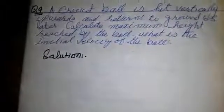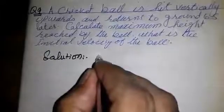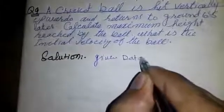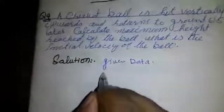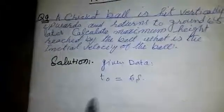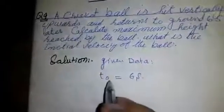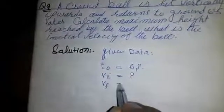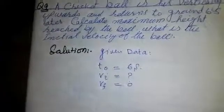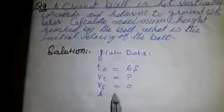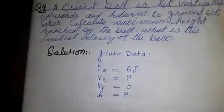First of all we see what data is given. Total time of the motion t0 equals 6 seconds. We have to find its initial velocity. Its final velocity will be 0 on reaching the highest point and at the height above reached.